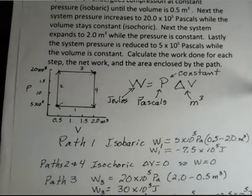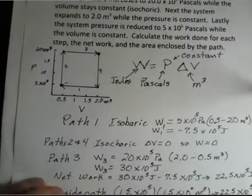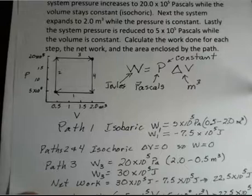To find the net work for the whole set of four steps, we have to add the two works, W3 and W1. As you suspect, we're going to get a smaller number: 30 times 10 to the fifth minus 7.5 times 10 to the fifth gives us 22.5 times 10 to the fifth joules.